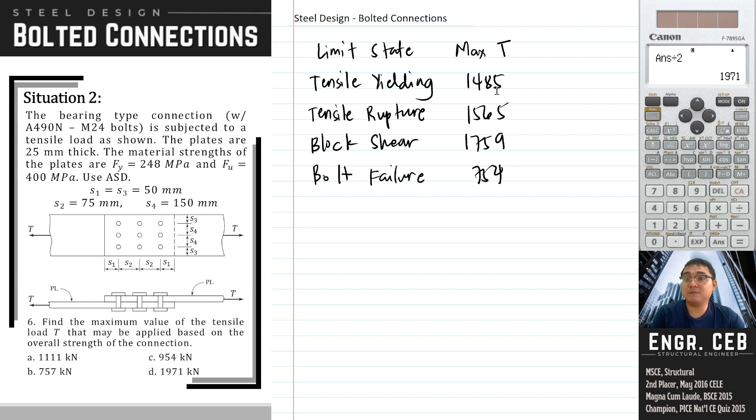For yielding, that is 1485. For tensile rupture, 1565. For block shear, 1759. Sorry, I have a typo error. For bolt failure, comparing the value of T for shear and bearing for the bolts, the governing is 954.